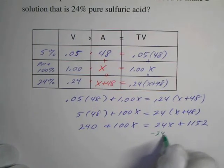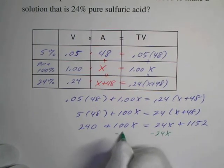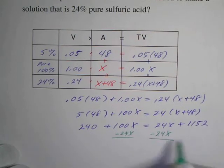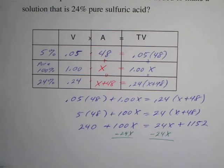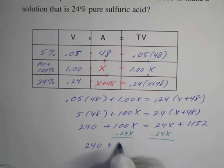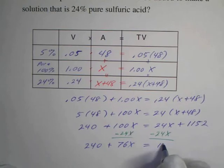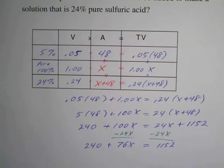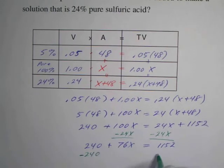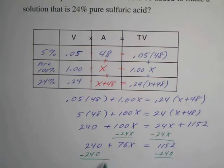And I'll do each step. Sometimes I do this in one step, but we do have a little bit more time so I can splurge. So it's going to be 76x equals 1152. Then I'll subtract 240 from both sides.